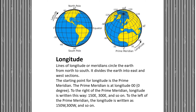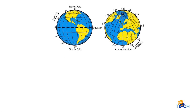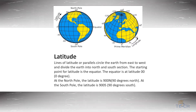To the right of the prime meridian, longitude is written this way — take a look. To the left of the prime meridian, the longitude is written as this. Latitude: lines of latitude, or parallels, circle the earth from east to west.